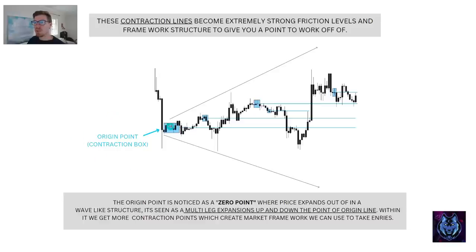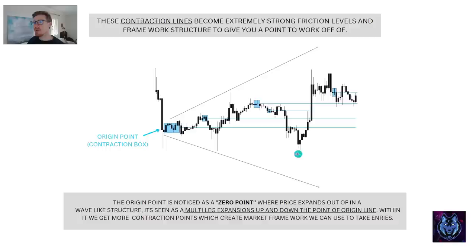As you can see, we've got the origin point over here — this contraction box. Price breaks up, breaks down, breaks up, breaks down. You can see we've got this point of origin line. Look how price goes to the top, breaks to the bottom, goes to the top, breaks to the bottom. This is the center point of the banks' balancing books.